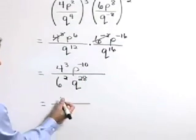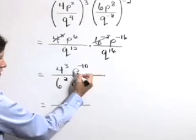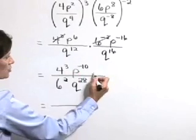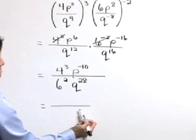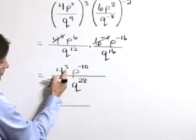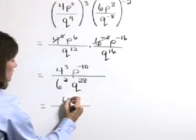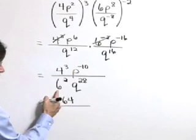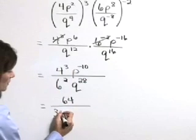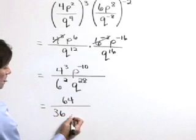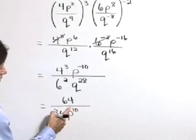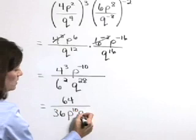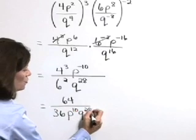Now at this point, this p to the negative 10 is going to cross that fraction bar. We'll change the sign of the exponent as we do that. Let's write 4 to the 3rd in its evaluated form as 64. Six squared is 36. That p to the 10th is going to come down into the denominator. Notice that's a positive 10th times q to the 28th.